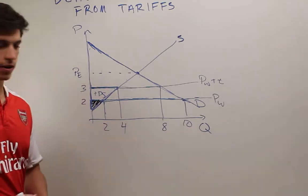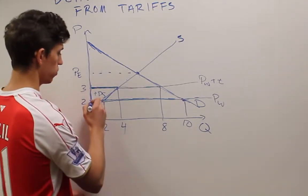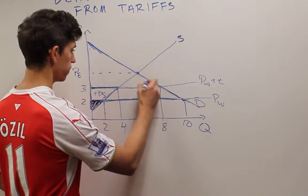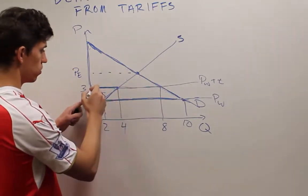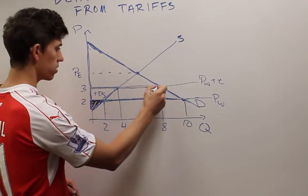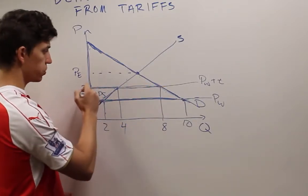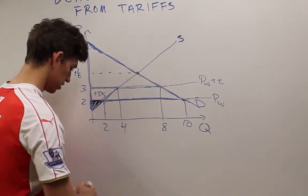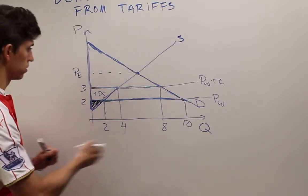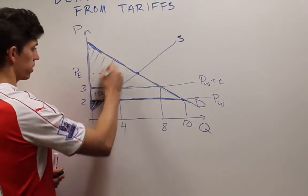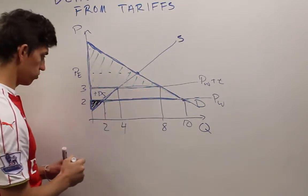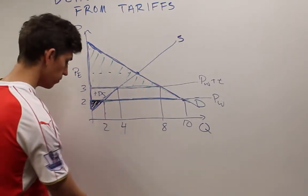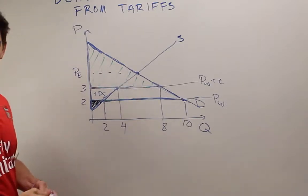Consumer surplus, on the other hand, shrunk. It was this big triangle here. But now they're only buying 8 units, and they're paying $3 each. So now their new surplus is this green area right here. They lost this whole bottom thing. Let's take a look at what they lost.